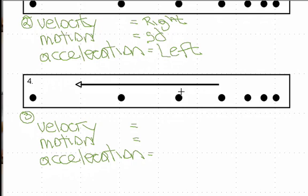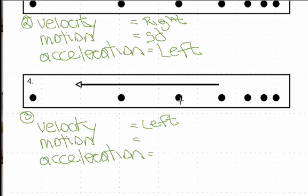In the third case, the arrow is pointing to the left, so the velocity vector is pointing to the left. The dots are getting farther apart — the same time interval covers a greater distance each step — so we're speeding up. Since we're going left and speeding up in that direction, the acceleration vector also points to the left.